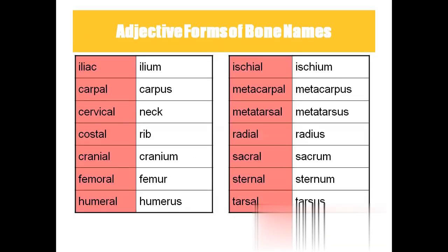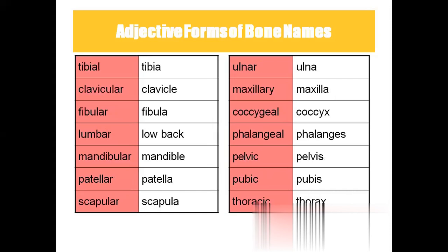Bone name terminology: Iliac = ilium; Carpal = carpus; Cervical = neck; Costal = ribs; Cranial = cranium; Femoral = femur (thigh bone); Humeral = humerus (upper arm bone); Ischial = ischium; Metacarpal = metacarpus; Metatarsal = metatarsus; Radial = radius; Sacral = sacrum; Sternal = sternum; Tarsal = tarsus; Tibial = tibia; Clavicular = clavicle; Fibular = fibula; Lumbar = lower back; Mandibular = mandible; Patellar = patella; Scapular = scapula; Ulnar = ulna; Maxillary = maxilla; Coccygeal = coccyx; Phalanges = finger bones; Pelvic = pelvis; Pubic = pubis; Thoracic = thorax.